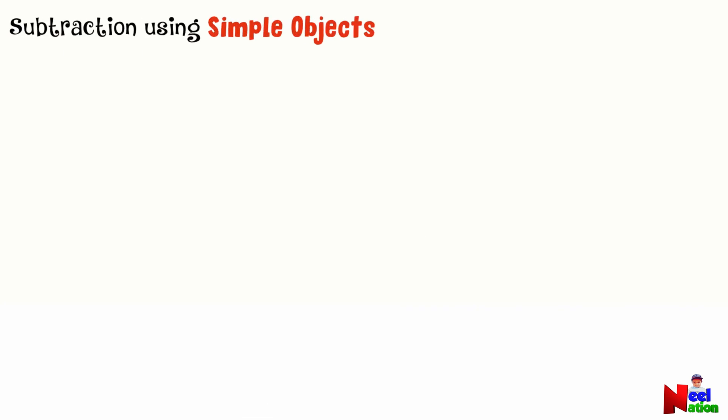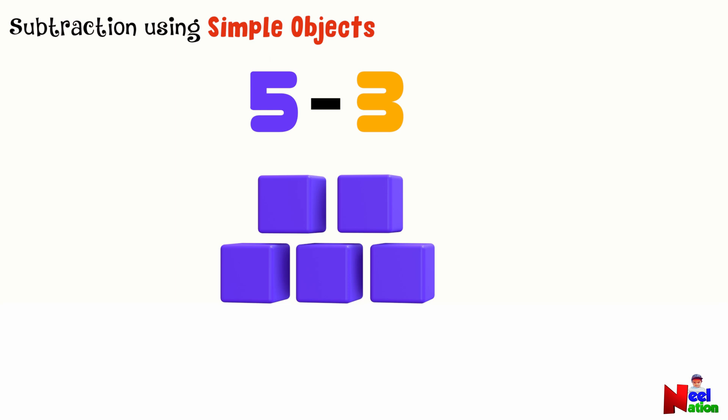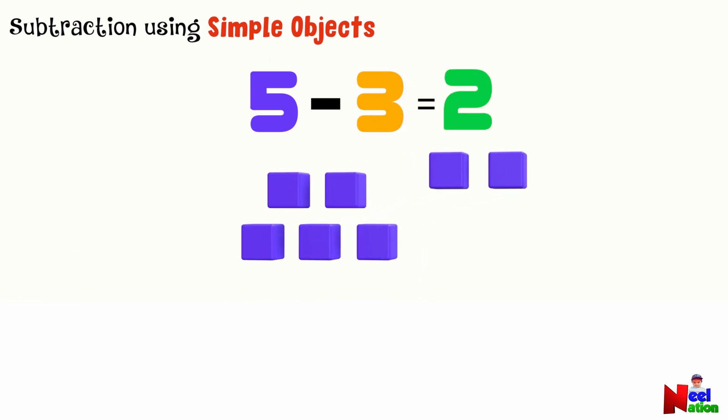Let's do subtraction using simple objects at home. Can you tell me what is five minus three? Let's do subtraction using some cubes. Let's start with five cubes. Let's remove three cubes from five. How many cubes are left? We are left with two cubes. When we take three away from five, we get two.